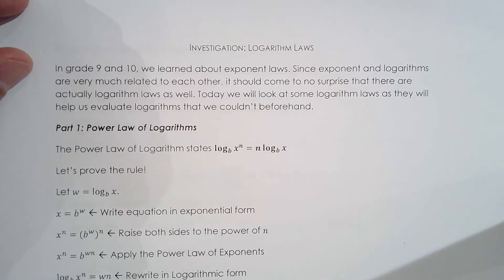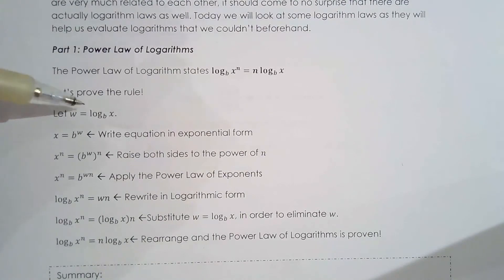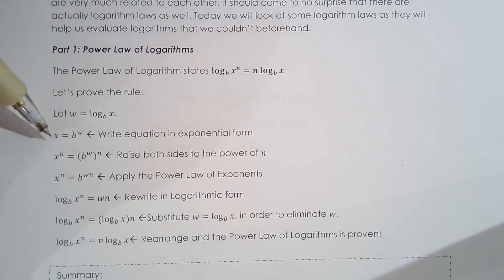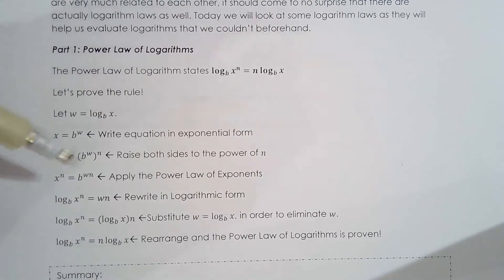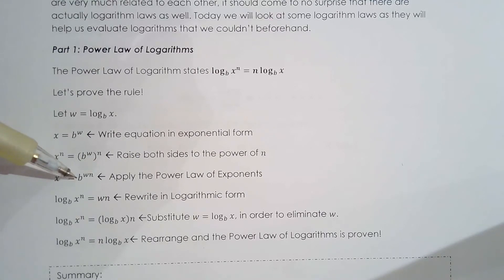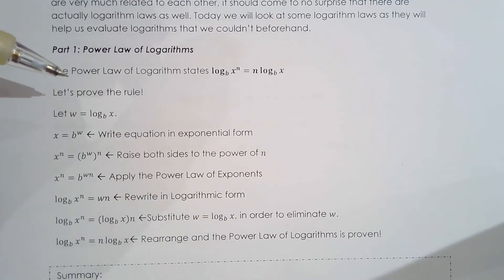We're going to try to prove the power law of logarithms. We let w equal log base b of x. Then x equals b to the w, written in exponential form. We raise both sides to the power of n, so x to the n equals b to the wn, because you multiply the exponents when you have a power of a power. Writing back in exponential form and replacing w with log base b of x gives us the power law of logarithms.